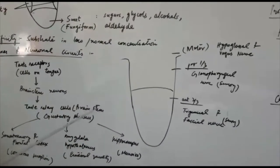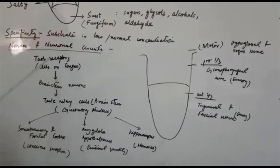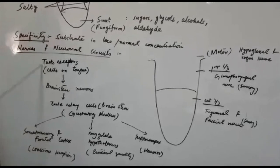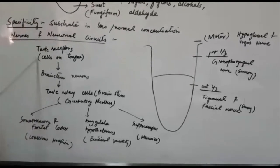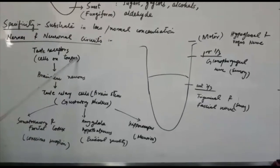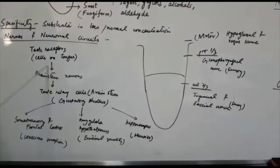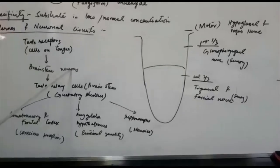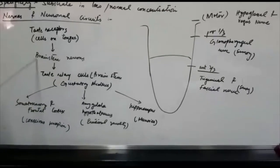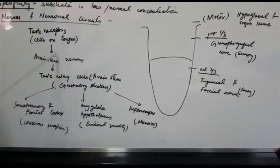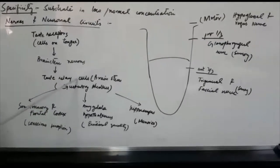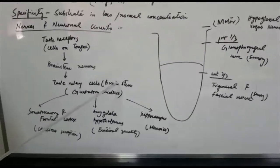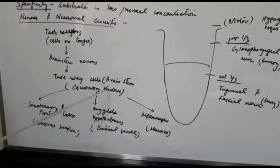So after the taste receptors or taste buds sense the taste sensation, these are the taste receptors of the cells on the tongue present in the taste buds. These signals are transmitted to the brain stem neurons which are responsible for taste sensation. Then these signals are transmitted to taste relay cells which are also present in the brain stem and are called the solitary nucleus.